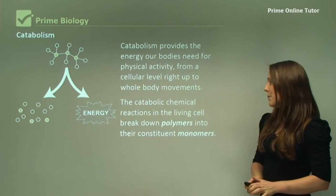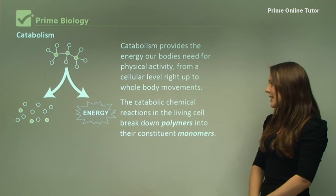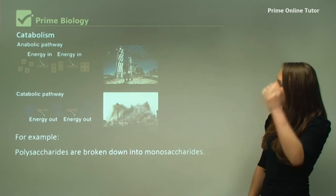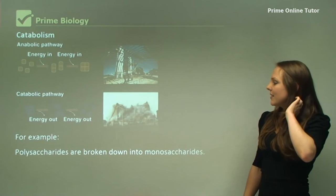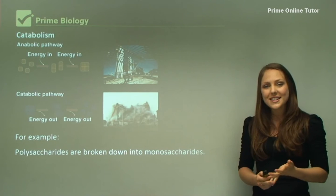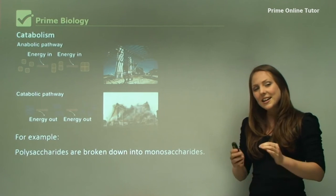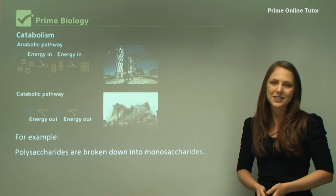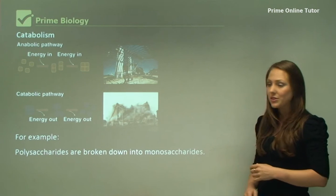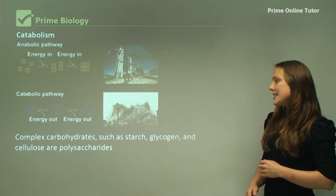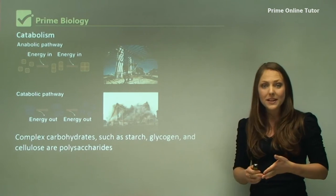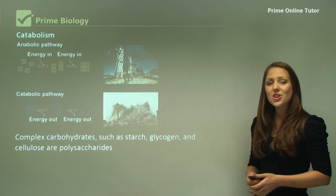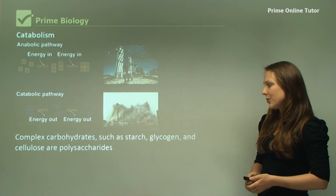The catabolic chemical reactions in the living cell break down polymers into monomers. For example, polysaccharides are a type of complex sugar and they can be broken down into monosaccharides, which are simple sugars. Examples of complex carbs, which are polysaccharides, include starch, glycogen, and cellulose.